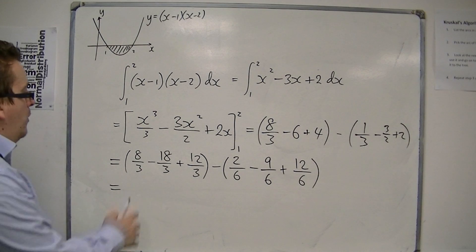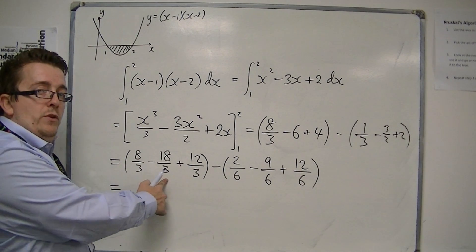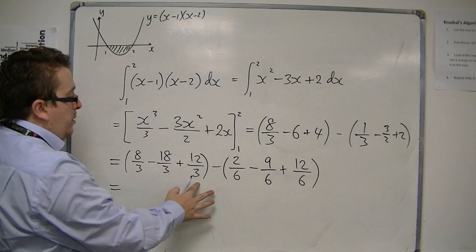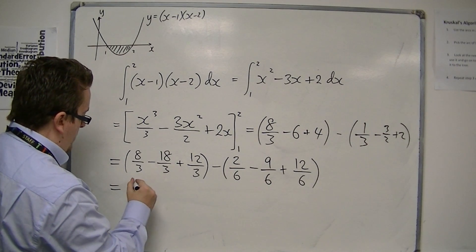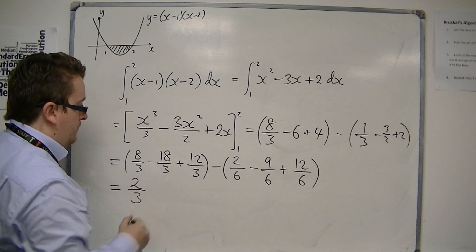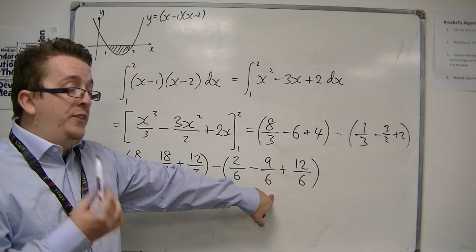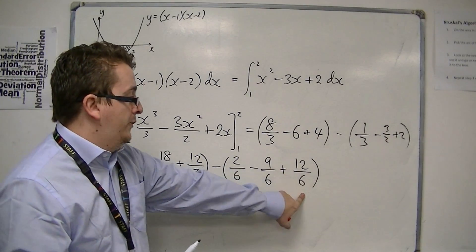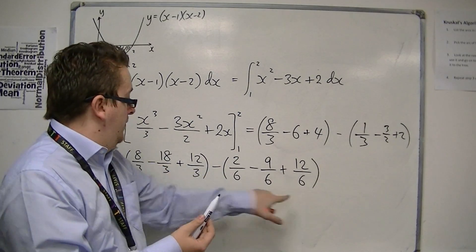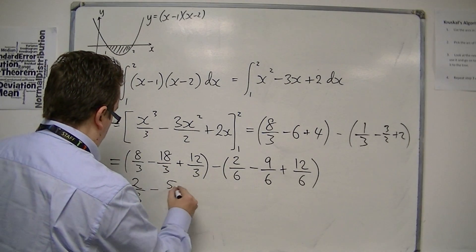So in the first bracket, we've got 8 over 3, take away 18 over 3, so that's minus 10 over 3, plus 12 over 3, so that's 2 over 3. Then we've got 2 over 6, take away 9 over 6, that's minus 7 over 6, plus 12 over 6 is 5 over 6, so we're taking away 5 over 6.